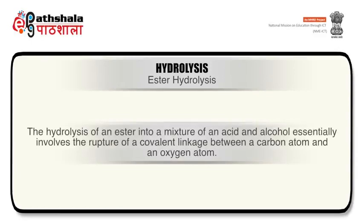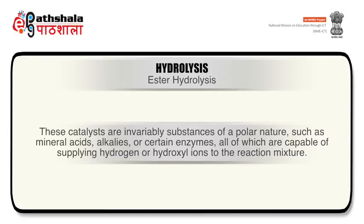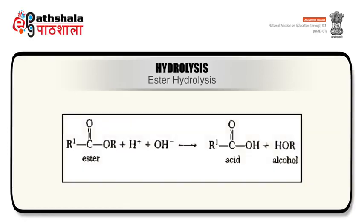Ester hydrolysis: the hydrolysis of an ester into a mixture of an acid and alcohol essentially involves the rupture of a covalent linkage between a carbon atom and an oxygen atom. Although some of these hydrolyses can be effected in pure water, in the majority of cases, the presence of a catalyst is needed to promote the reaction. These catalysts are invariably substances of a polar nature such as mineral acids, alkalis or certain enzymes, all of which are capable of supplying hydrogen or hydroxyl ions to the reaction mixture. The general scheme employed to denote ester hydrolysis is shown on screen.